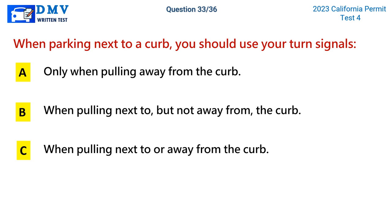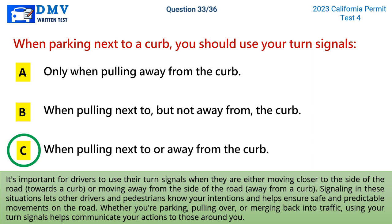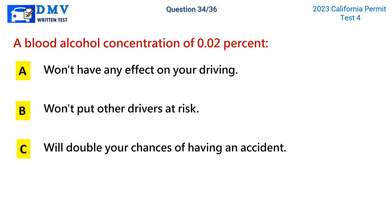Question 33: When parking next to a curb, you should use your turn signals. A) only when pulling away from the curb, B) when pulling next to but not away from the curb, C) when pulling next to or away from the curb. The correct answer is C. Drivers should use their turn signals when moving closer to the side of the road toward a curb or moving away from it. Signaling lets other drivers and pedestrians know your intentions, ensuring safe and predictable movements whether you're parking, pulling over, or merging back into traffic.